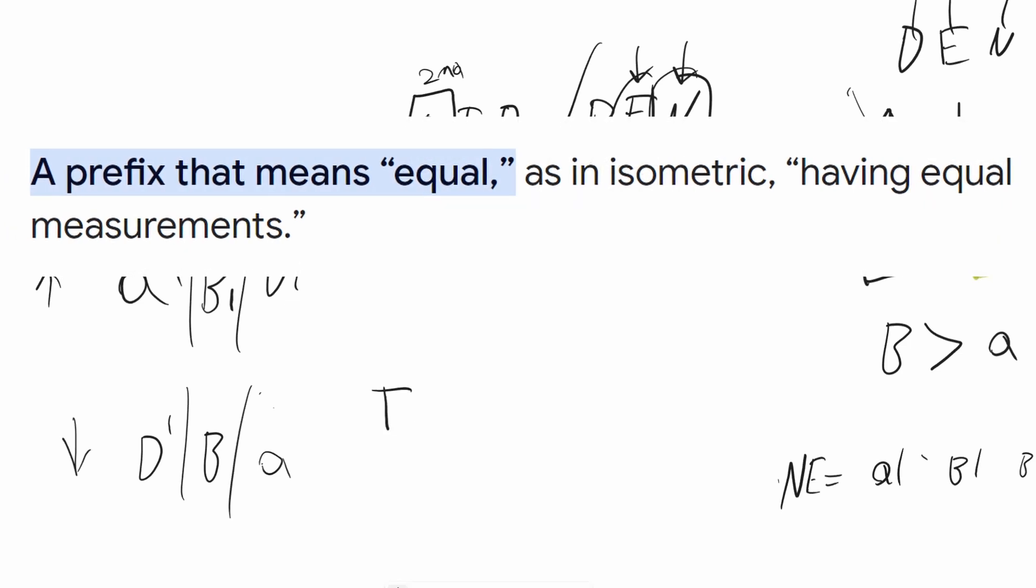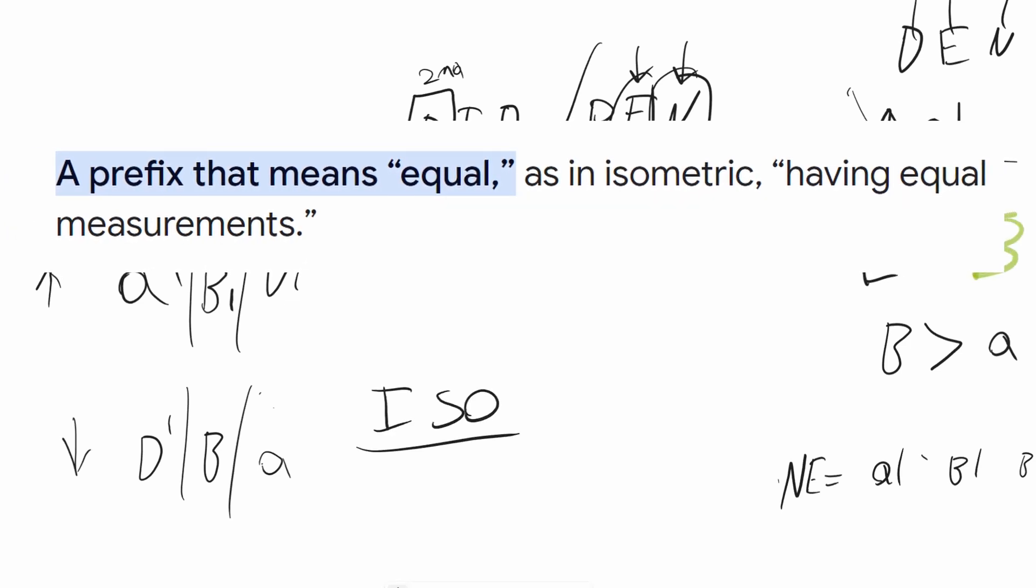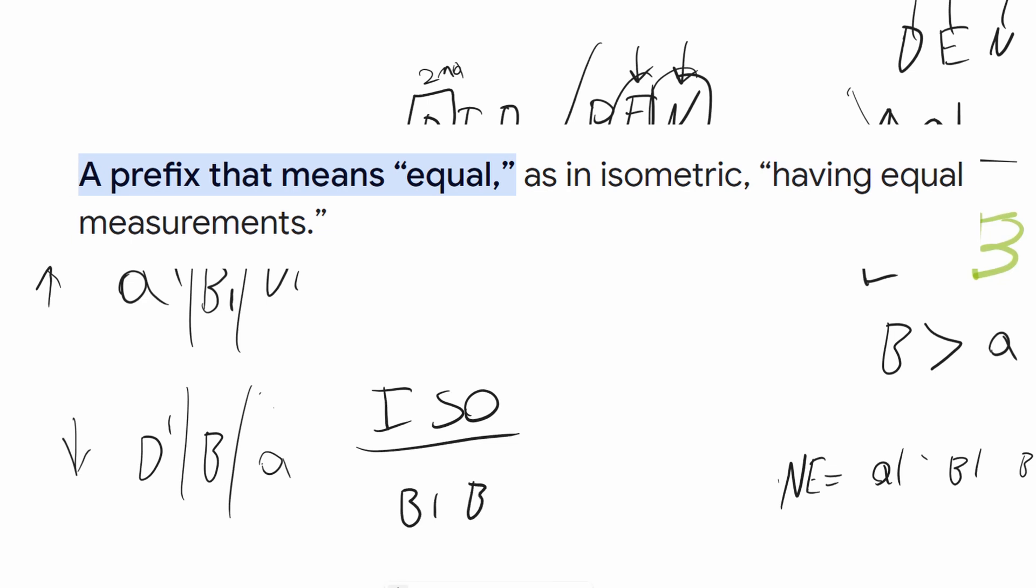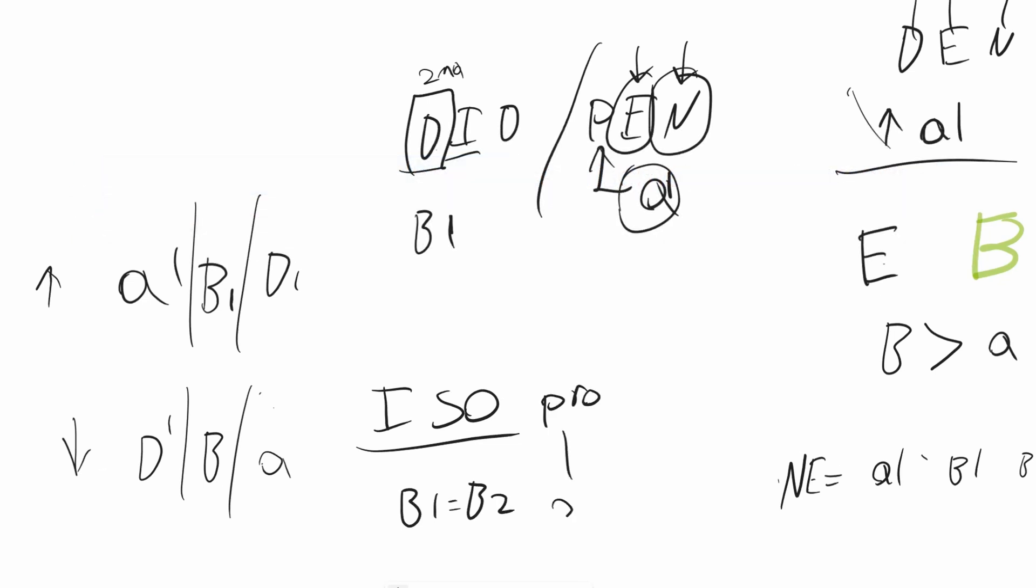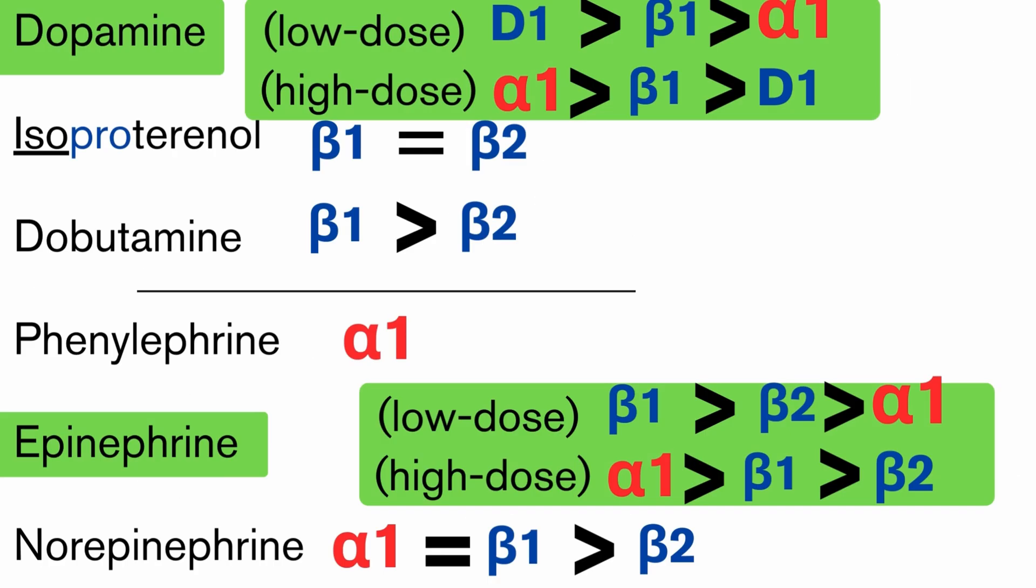Isoproterenol, this is too easy because the word iso means the same. So beta one, beta two, the same. And then pro is agonist, has an agonist on this receptor. And the last one, dobutamine, more beta one than beta two. Kind of reminds me of phenylephrine. It's just not so complex. It's a lot easier. Dobutamine.